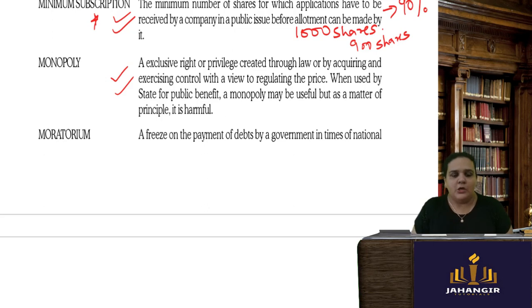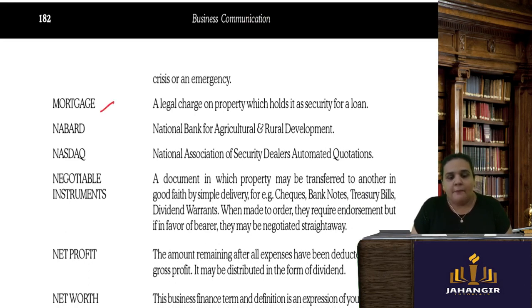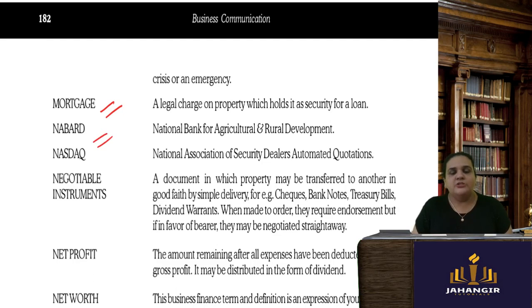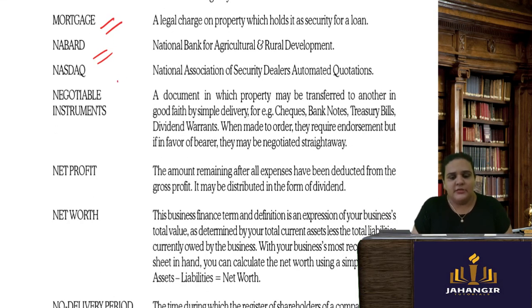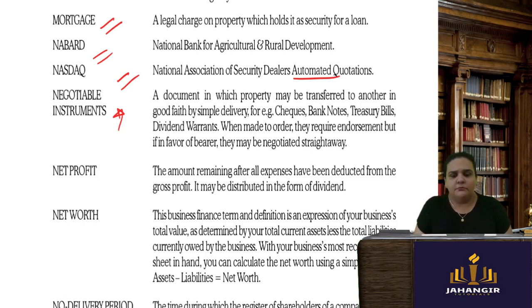Moratorium is a freeze on the payment of debts by the government in times of national crisis or emergency. Mortgage is a legal charge created on property as a form of security for the person who has lent you money. NABARD stands for National Bank of Agriculture and Rural Development. NASDAQ stands for National Association of Security Dealers Automated Quotations. Negotiable instruments include promissory notes, bank notes, cheques, and treasury bills.